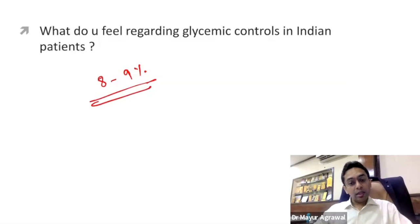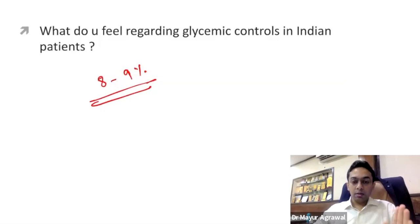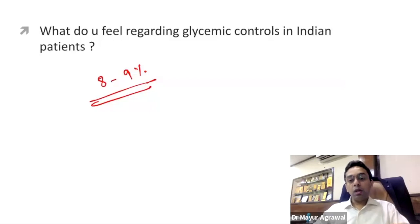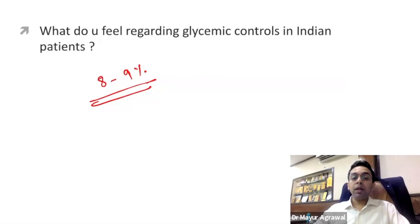Even with poor glycemic control, our insulinization is even poorer. Almost 50% of patients who have diabetes do not know they have it. Of those on treatment, only one third — 30 to 35% — actually meet glycemic targets. So almost 70 to 75% do not meet glycemic targets. Even of those on insulin, only one in four — 25% — achieves glycemic control. That is because of the issue of titration: insulin is initiated but the dose is not increased as required.